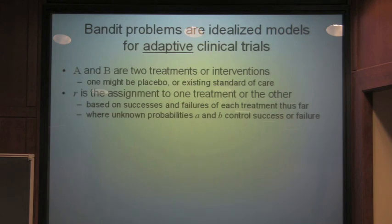Our strategy is how we assign patients in this trial based on successes or failures of how each treatment has done thus far. The unknown probabilities, little a and little b, are the cure rates of the two medical interventions.